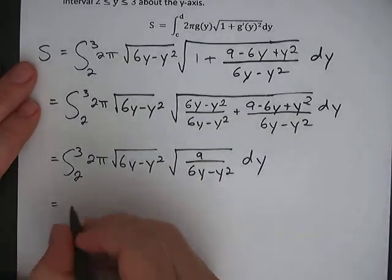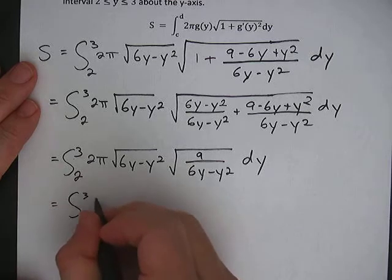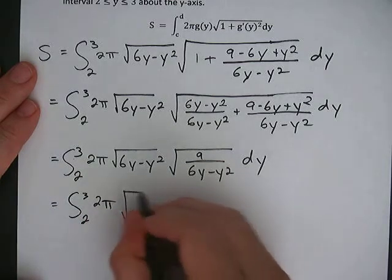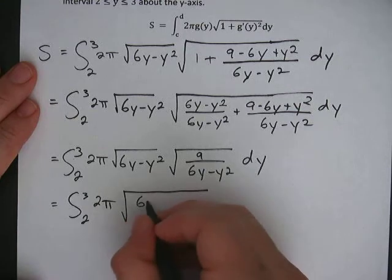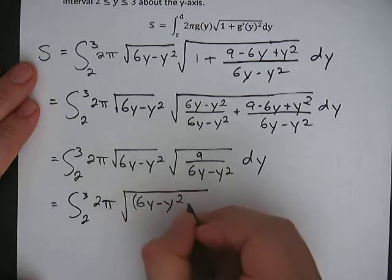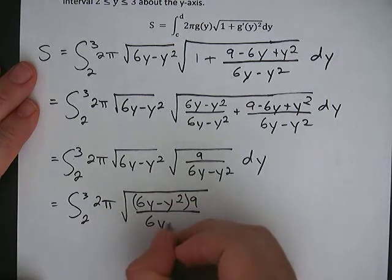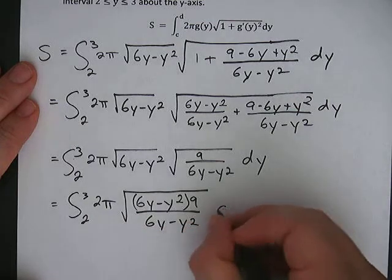I'll go ahead and write that out just so you can make sure and see that. So this will turn into one radical. It'll be 6y minus y squared times 9 over 6y minus y squared dy.